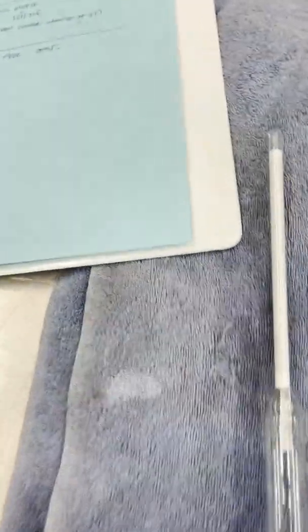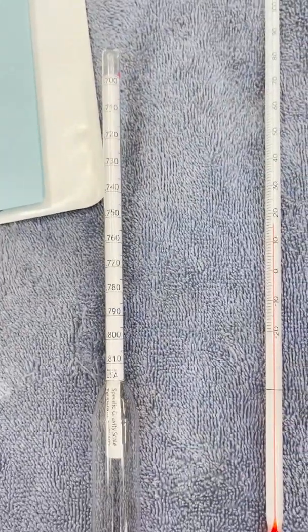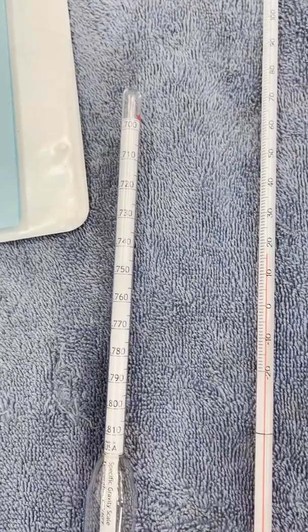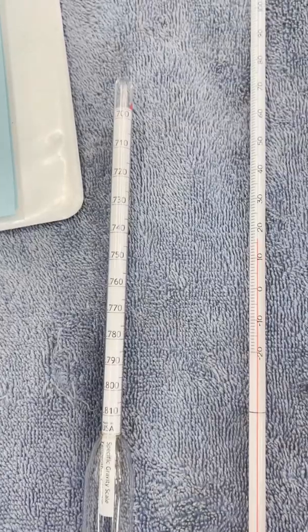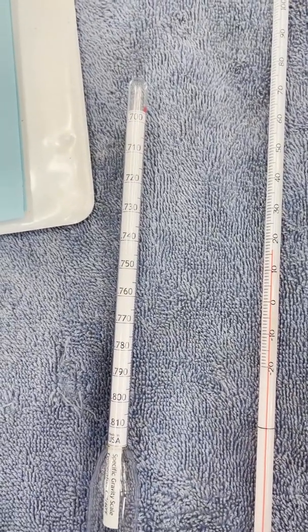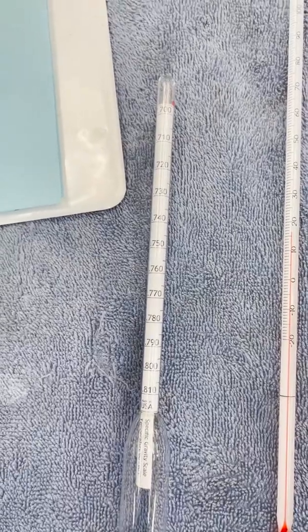So right here, we have our hydrometer. You need a hydrometer. Gasoline is going to fall in the range of 700 to 800, usually around 730, 732. In the winter, 715, 725.